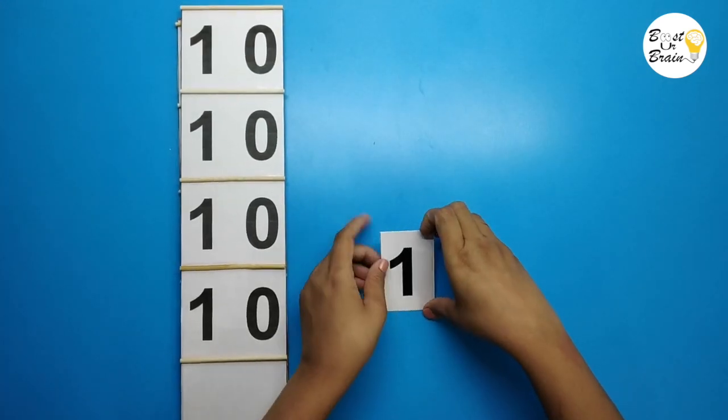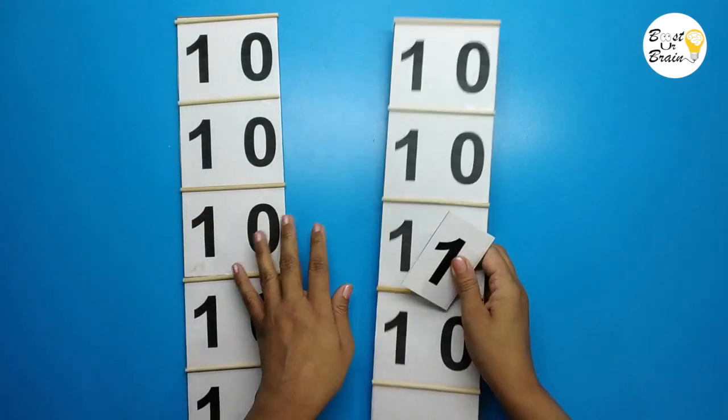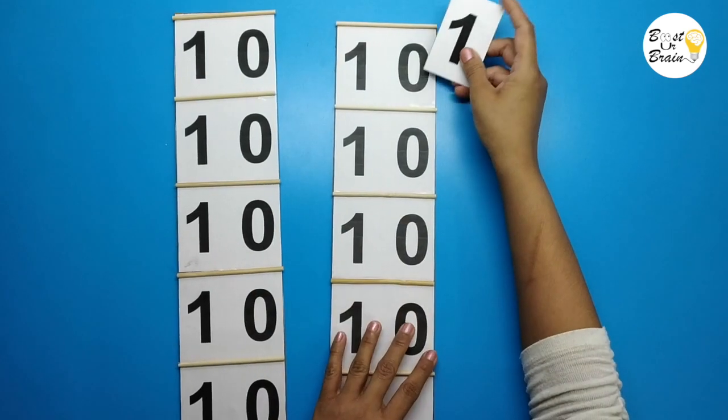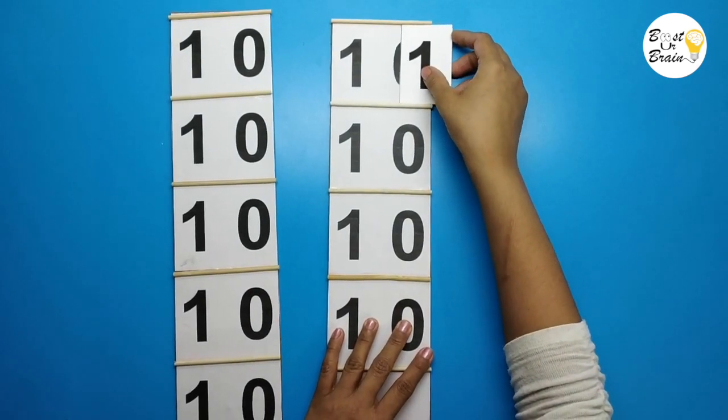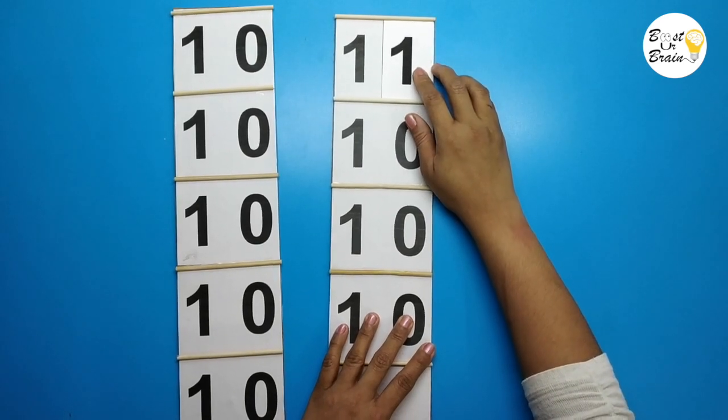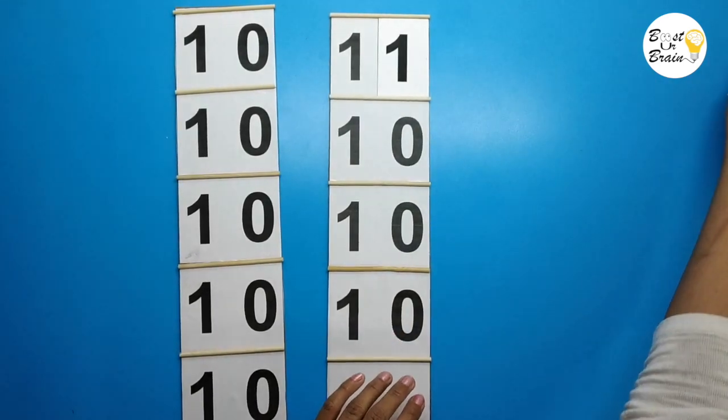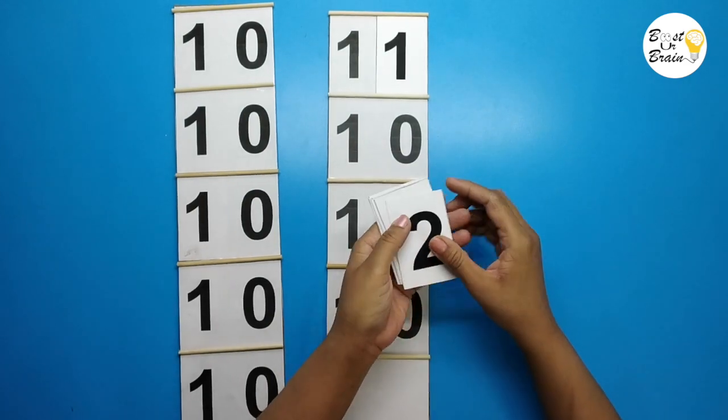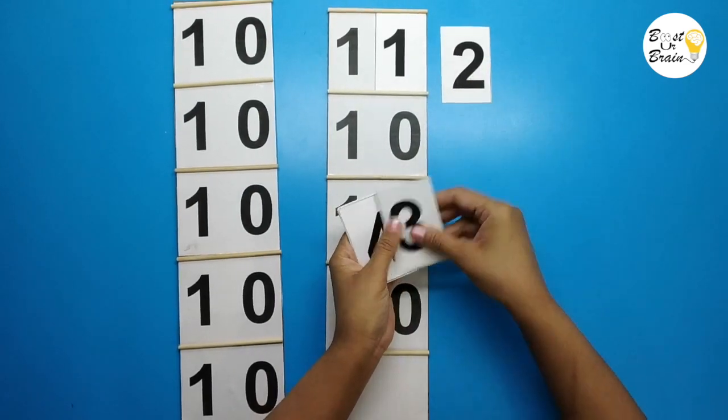Make sure the size of the number should be like that it can slide and hide the number 0 properly. Cut other numbers and make the cards in the same way.